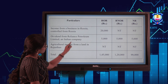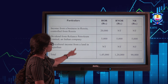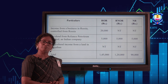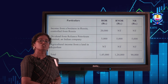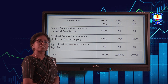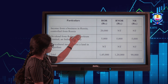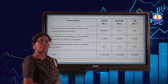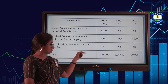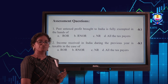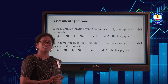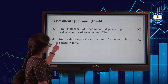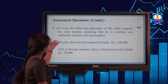Looking at the final summation: ROR gets 1,45,000; RNOR gets 1,20,000; and non-resident gets 90,000. ROR gets the most because all Indian income and foreign income is taxable for resident and ordinarily resident. Foreign income is not taxable for non-residents, which is why their total is lower. After learning this video, you are able to understand the scope of total income, the incidence of tax, and how it is taxed. These are K2-level questions, and you should also be able to solve K3-level questions.